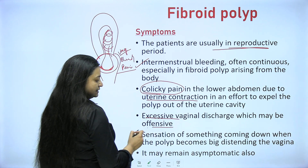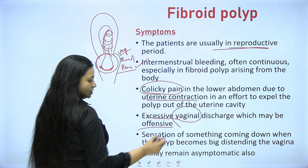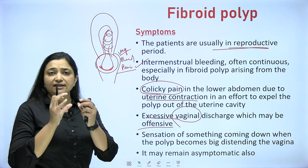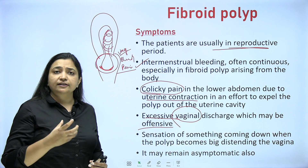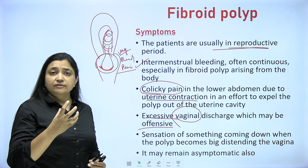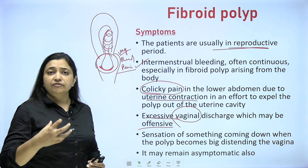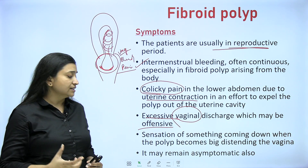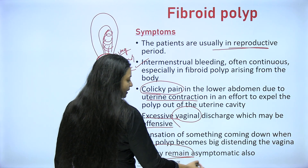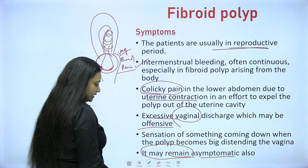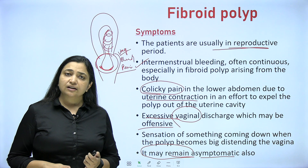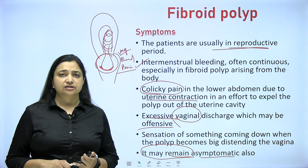Excessive offensive vaginal discharge and the sensation of something coming out and dragging down - because it is heavy, it can be 5 centimeter, 8 centimeter - a huge fibroid polyp. The patient will feel something is coming out of the vagina with a dragging, heavy sensation. In some very few cases it may remain asymptomatic, but that is very rare. Otherwise - pain, something coming out per vaginum, dragging sensation, bleeding, vaginal discharge.